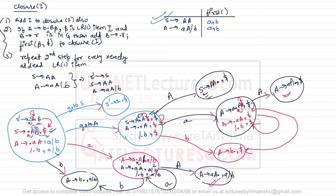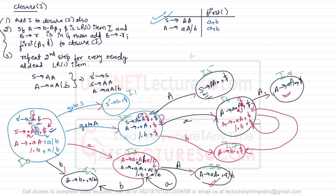We can count how many states there are. Numbering them: I₀ is the first state, then I₁, I₂, I₃, I₄, I₅, I₆, I₇, I₈, and I₉ — so there are nine states in total. This is how you create the DFA diagram for CLR parsers. In the next video, I'll take one more example and show how to create the CLR parsing table and perform CLR parsing. CLR parsing uses the same algorithm as LALR, and I'll also cover how to convert the CLR table to an LALR table.